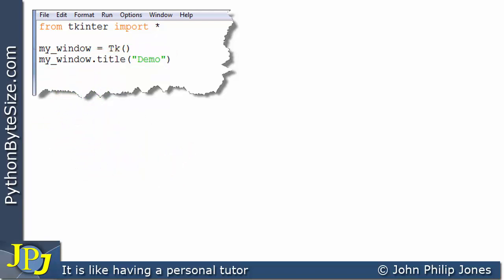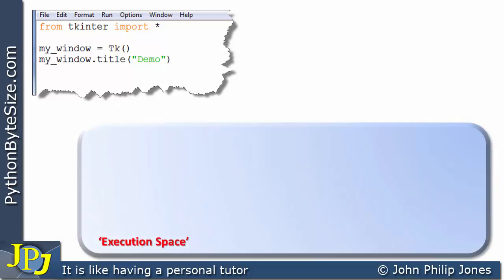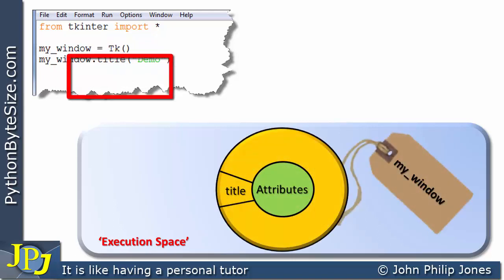So if we go back to the schematic diagram I always show when we're talking about objects, we know we're going to get an execution space, and we know that this line here is going to produce an instance of the TK class, and it's going to have the name my_window. And that can be shown here.